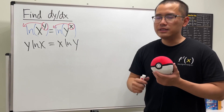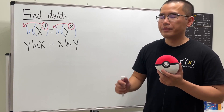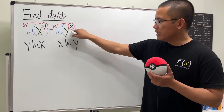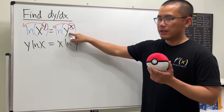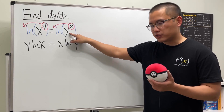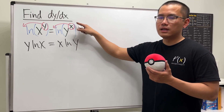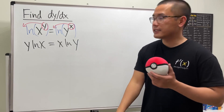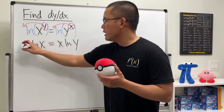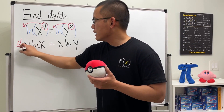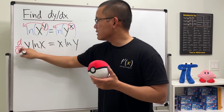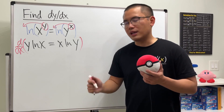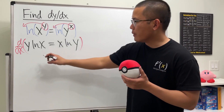Again, this is what we do when the base is a function and likewise the power is also a function — you take the natural log first. Let's put d/dx on both sides; we are differentiating with respect to x.